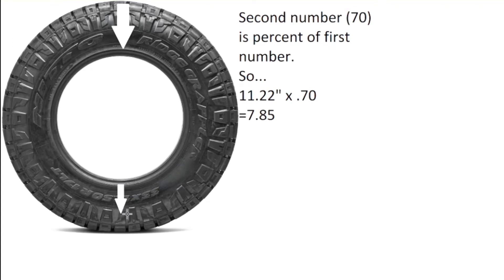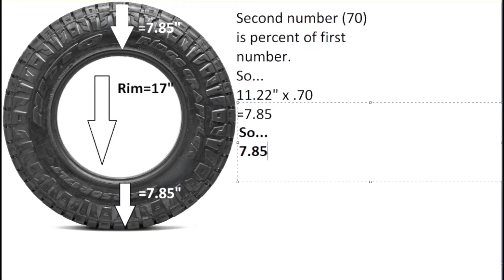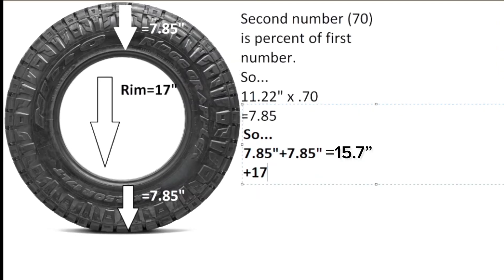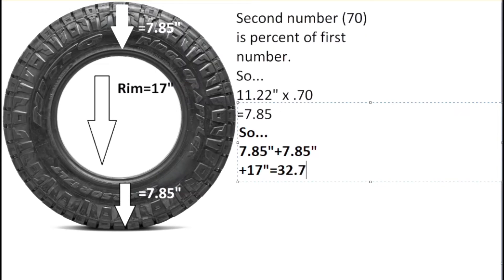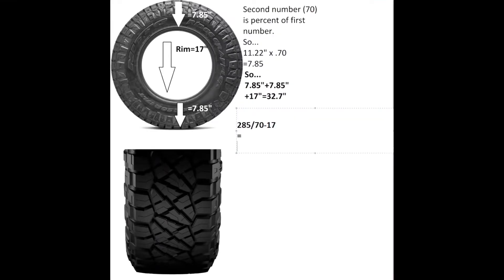Now we're going to multiply that number times two, since we have two sidewalls to make up the height of the tire. That gives us 15.7 inches. Now add that to the last number, 17, which is the rim diameter, to give us our total height. That equals 32.7 inches. So now we see we have a tire that is 32.7 inches tall and 11.2 inches wide on a 17 inch rim.